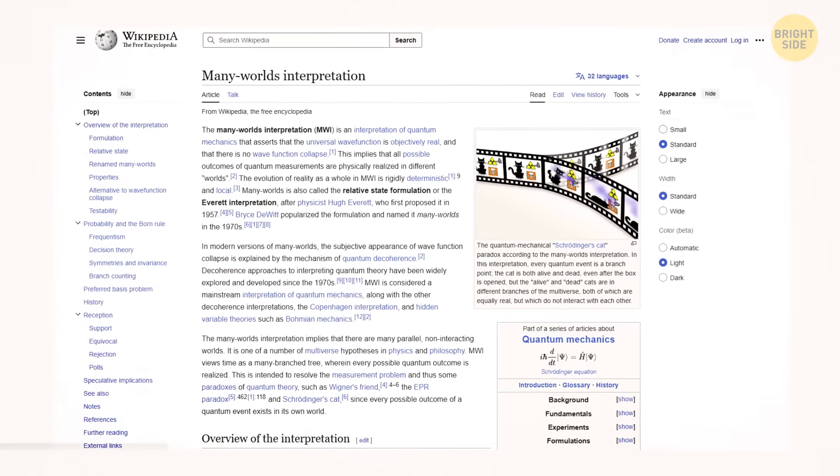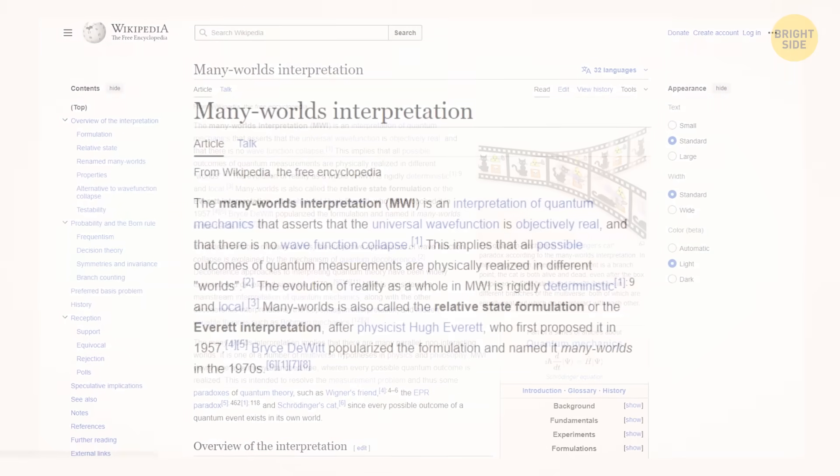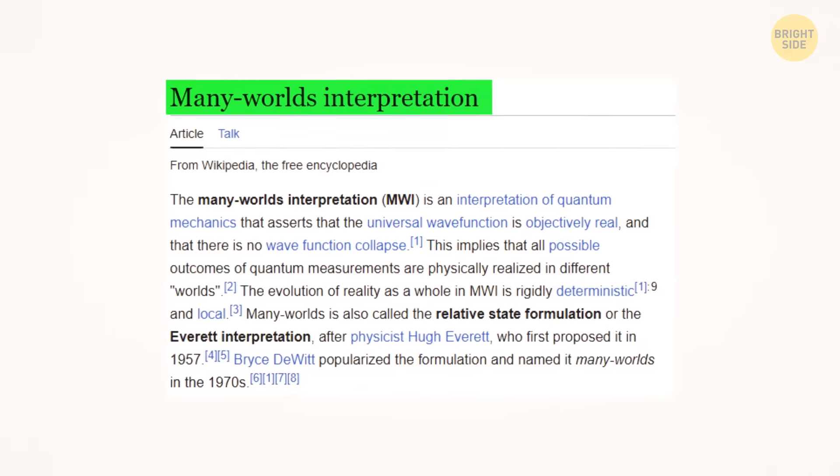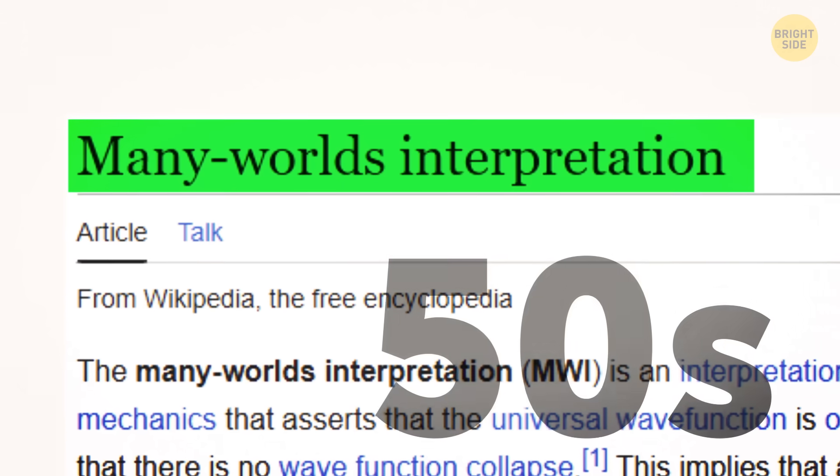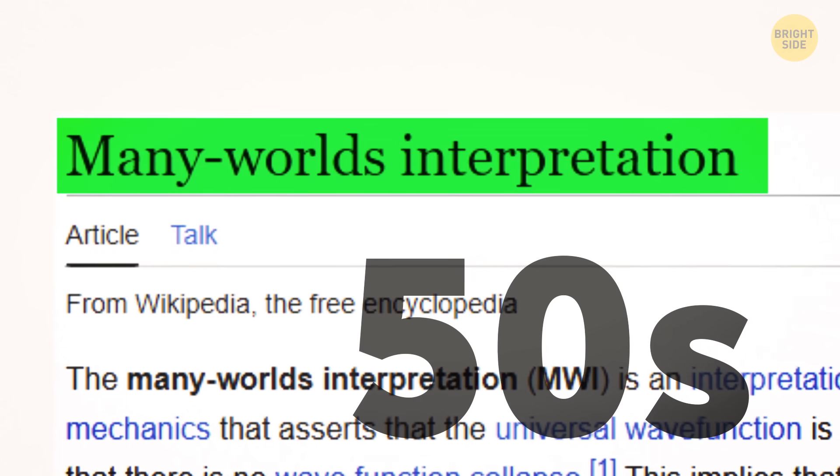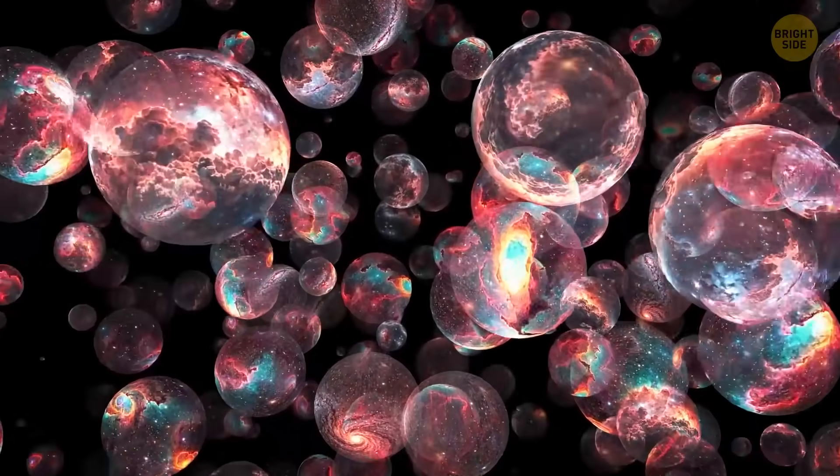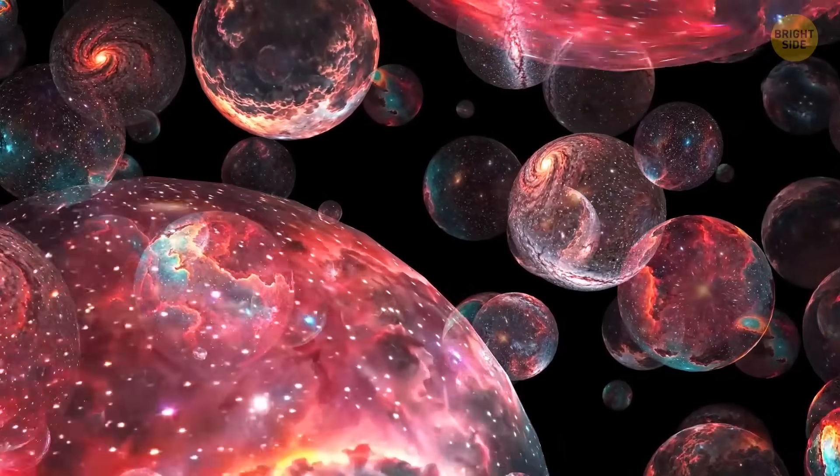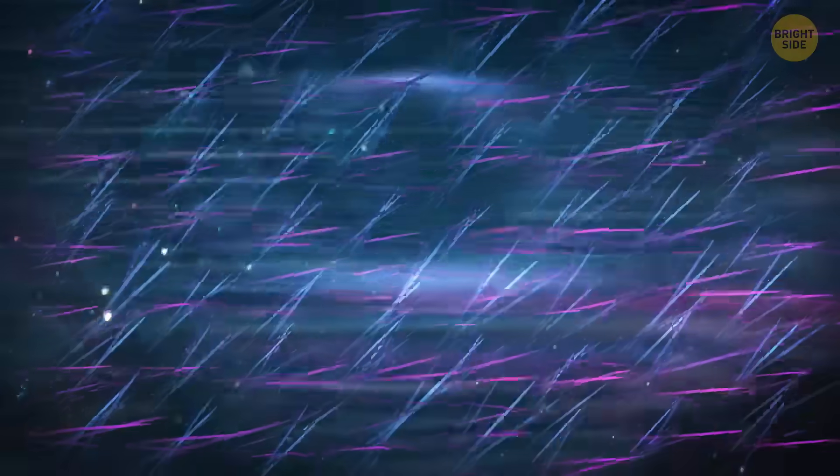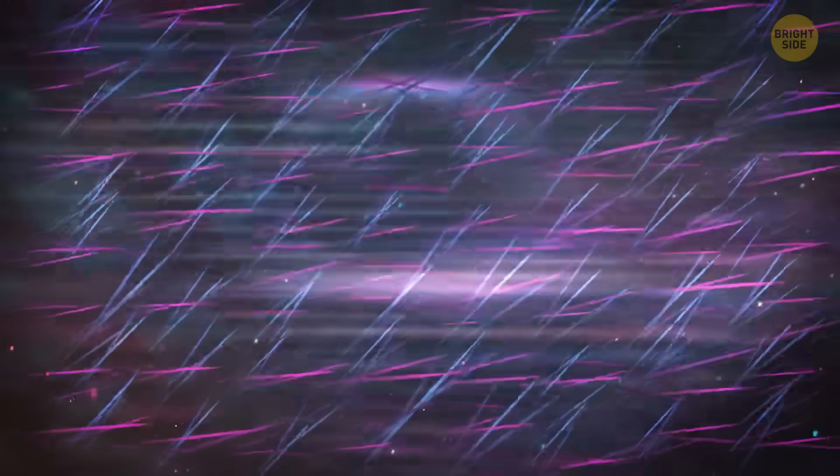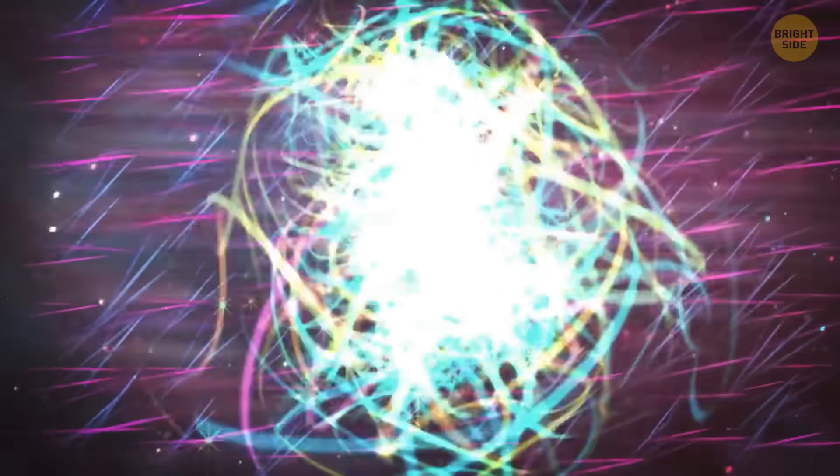But the simulation theory isn't the only possible explanation. There are also parallel universes. The many-worlds interpretation was first proposed in the 1950s. The basic idea is, maybe there's a separate universe for anything that could possibly happen ever. Every nanosecond, every particle changes its state in some way, and a new branch of the universe is born.